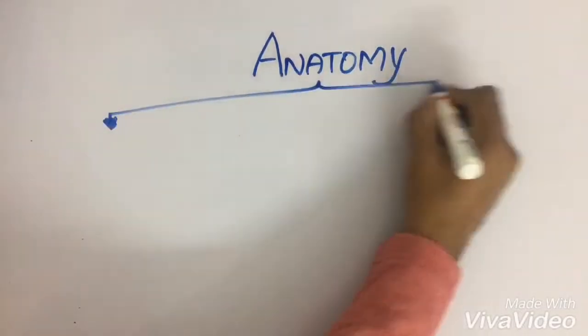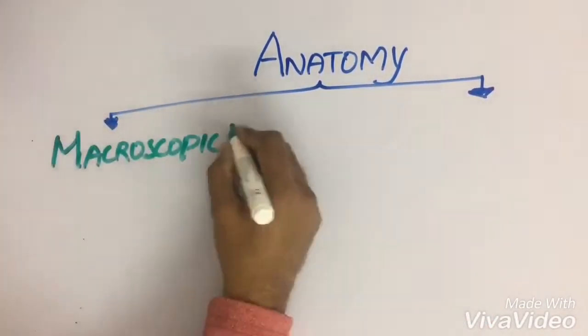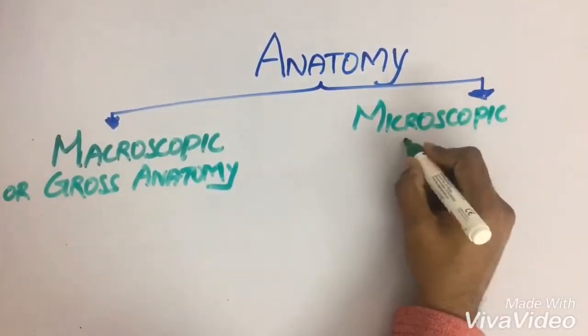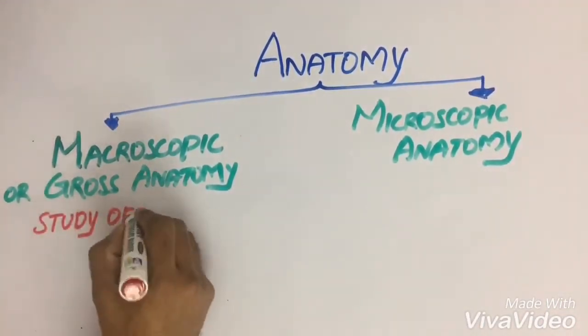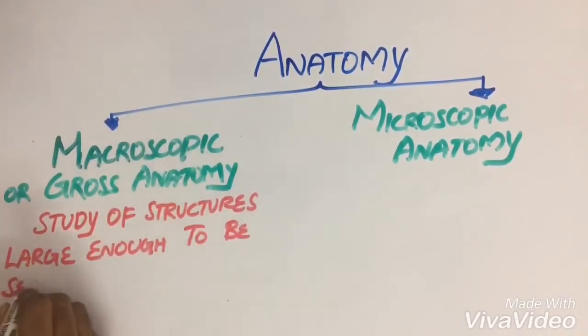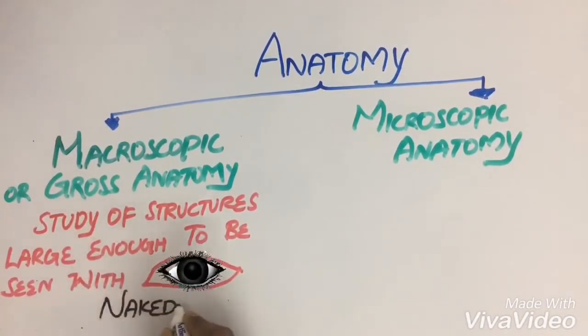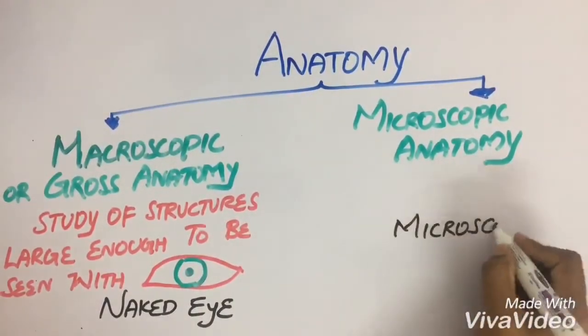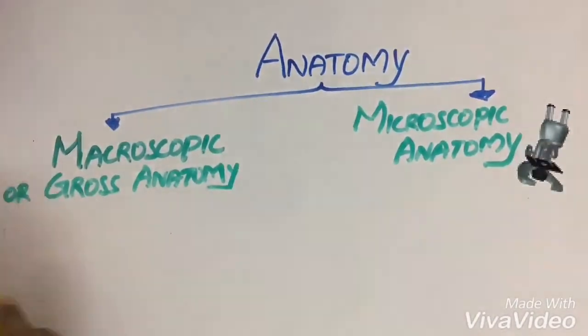Anatomy can be classified into two categories based on their size: macroscopic anatomy or gross anatomy, and microscopic anatomy. Macroscopic anatomy is the study of structures which are large enough to be seen with the naked eye without any help of microscope. In microscopic anatomy, the structures are very tiny so we need microscope to study them.